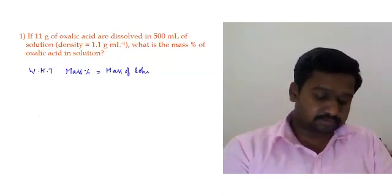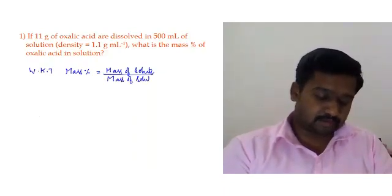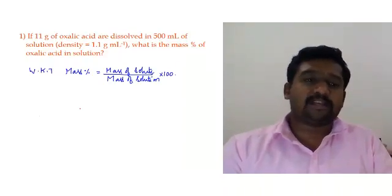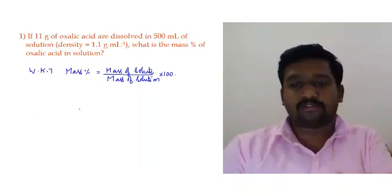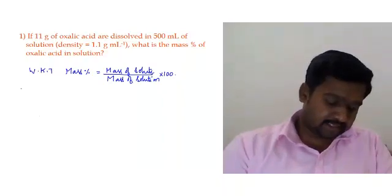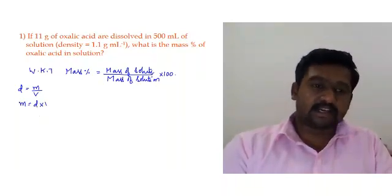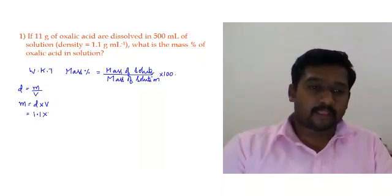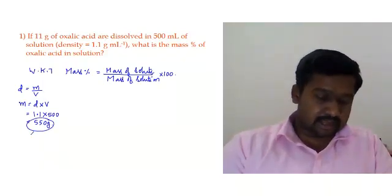We know that mass percentage is calculated as: mass of solute divided by mass of solution, multiplied by 100. The mass of solute is 11 grams, and we don't know the mass of solution directly, but density and total volume are given. Applying density = mass / volume, mass = density × volume = 1.1 g/ml × 500 ml = 550 grams.